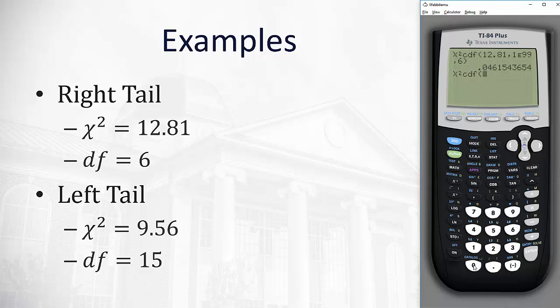With a left-tailed test, the lower limit is 0, comma, the upper limit is 9.56, comma, the degrees of freedom are 15.